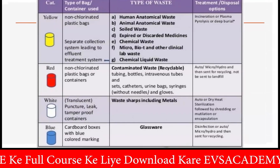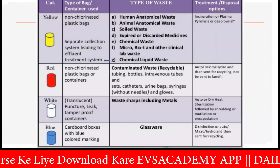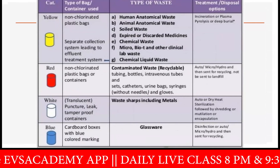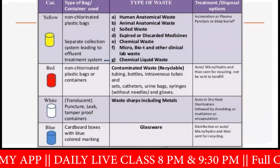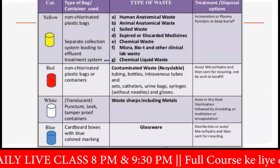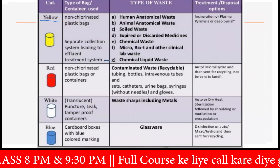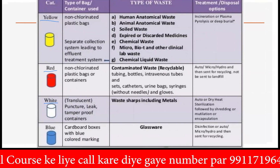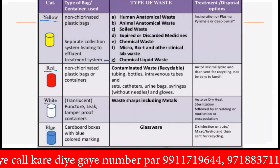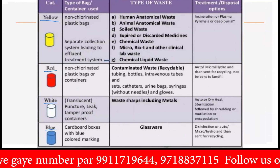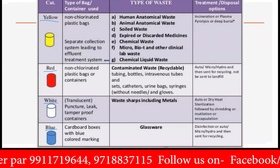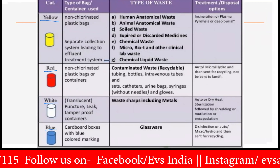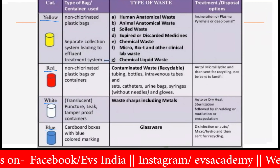If you look at these four categories, these are the four categories that you can see here. This is the most important photo of this particular chapter. You can see the four categories: the first category is the yellow bag, second category is the red bag, third category is the white bag, and fourth category is the blue bag. Under these types of bags, you can see what type of container is used and what type of waste you can put in these particular category bags.